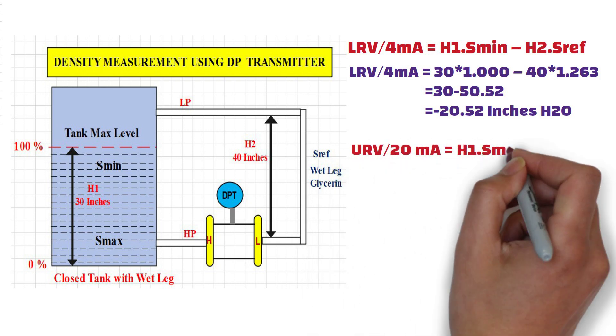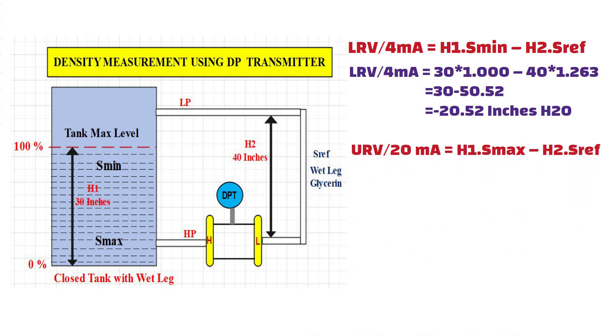Similarly, this is the standard equation to calculate upper range value for this DP transmitter. When we put all the values into the equation, we get minus 14.52 inches H2O, which is our upper range value in this example.